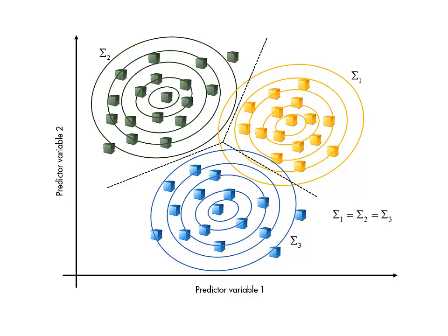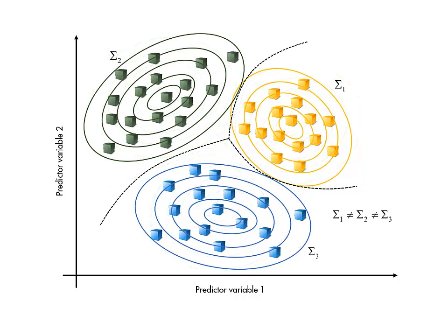However, linear boundaries are not appropriate for all problems. If we do not assume that the covariance matrices are the same for all classes, the boundaries turn out to be quadratic. And again, the coefficients are determined by the mean vectors and covariance matrices of the observed classes.